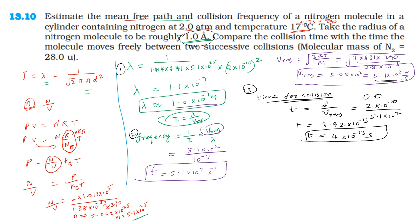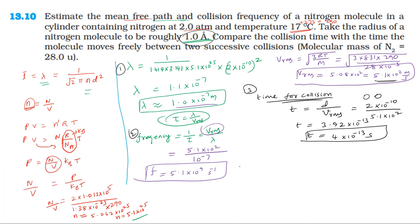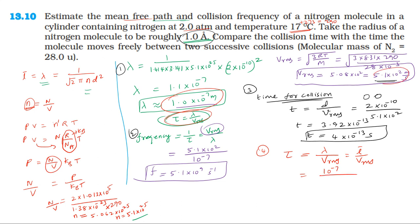Next is the time taken for successive collisions, which is the relaxation time. The relaxation time equals mean free path divided by RMS velocity. The mean free path is 10 power minus 7 metres divided by RMS velocity 5.1 into 10 power 2 metres per second, giving approximately 2 into 10 power minus 10 seconds.